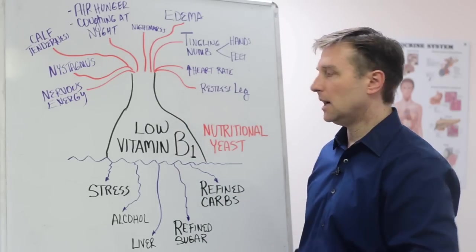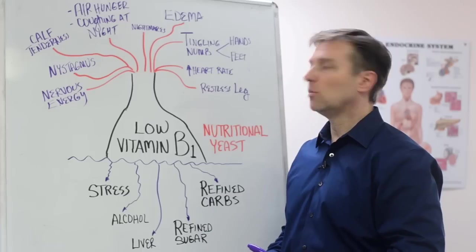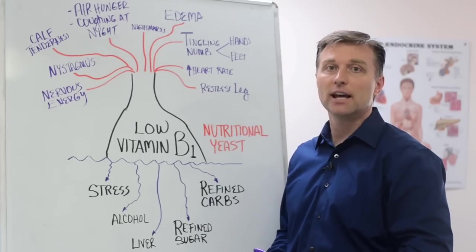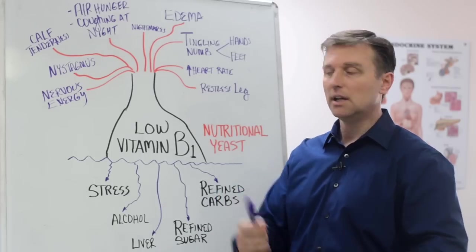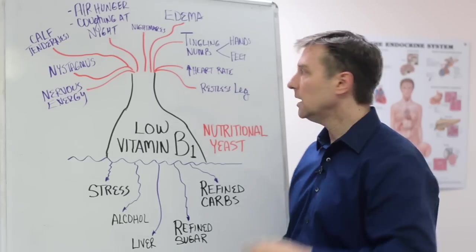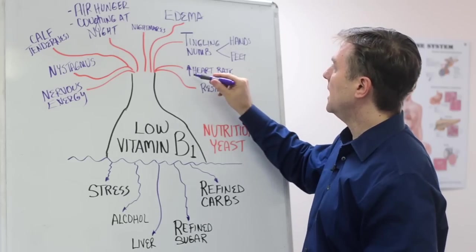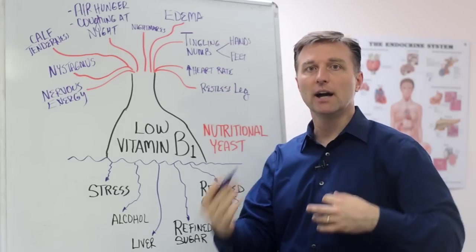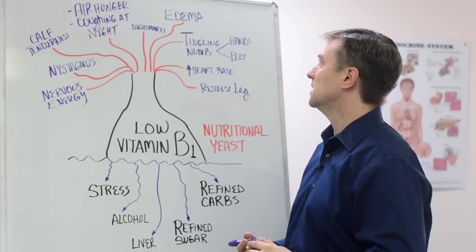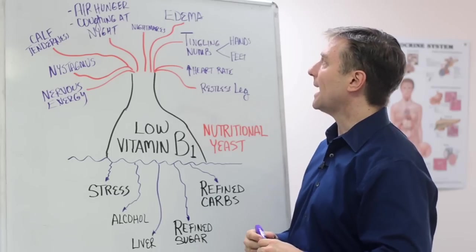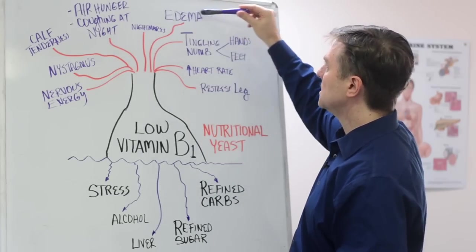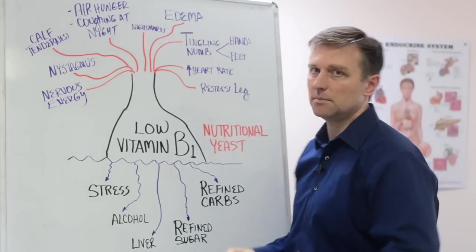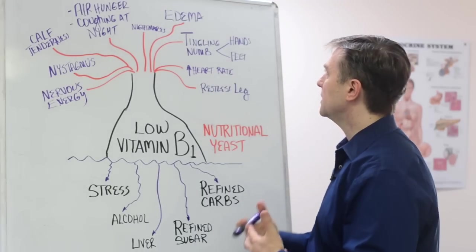If you look up low vitamin B1, a classic vitamin deficiency, like really severe, they call that berry berry. Berry berry affects the heart. And that's why the pulse rate starts going higher and higher with a B1 deficiency. You also end up backing up with fluid into your legs, edema from a low vitamin B1 as well, because the heart is weak.